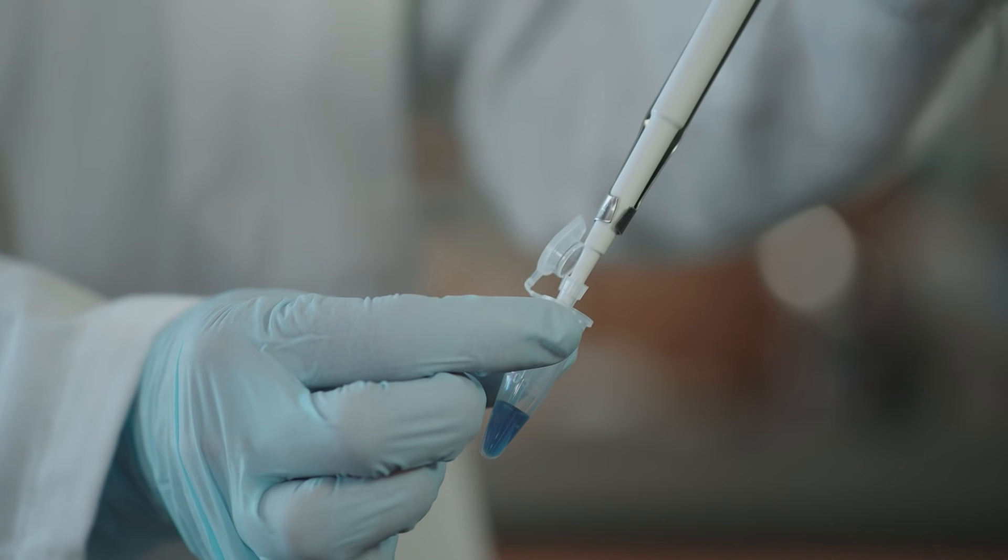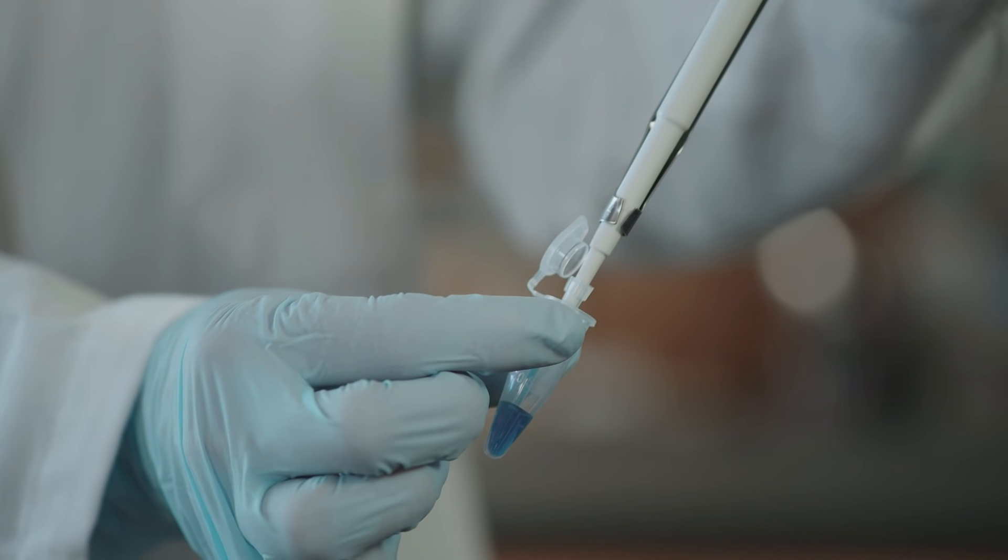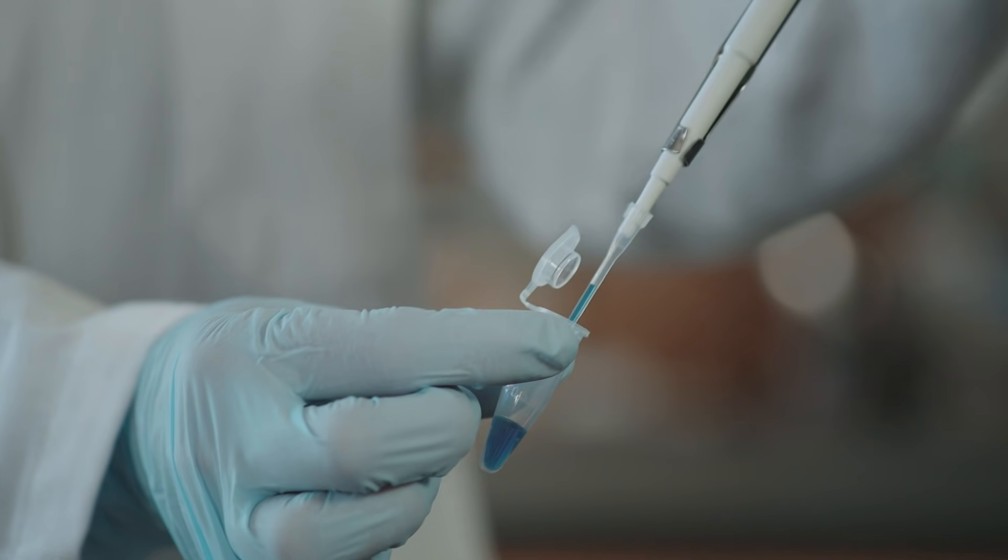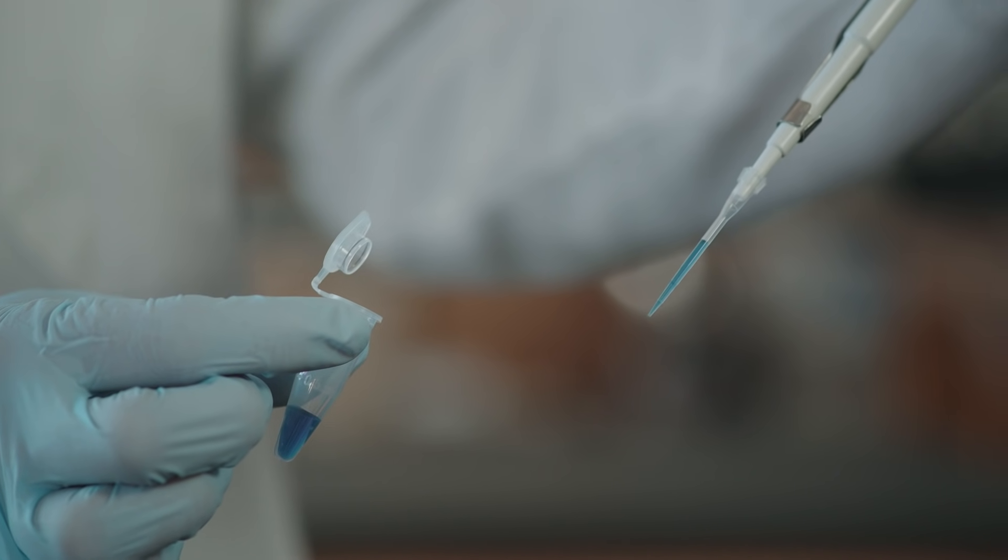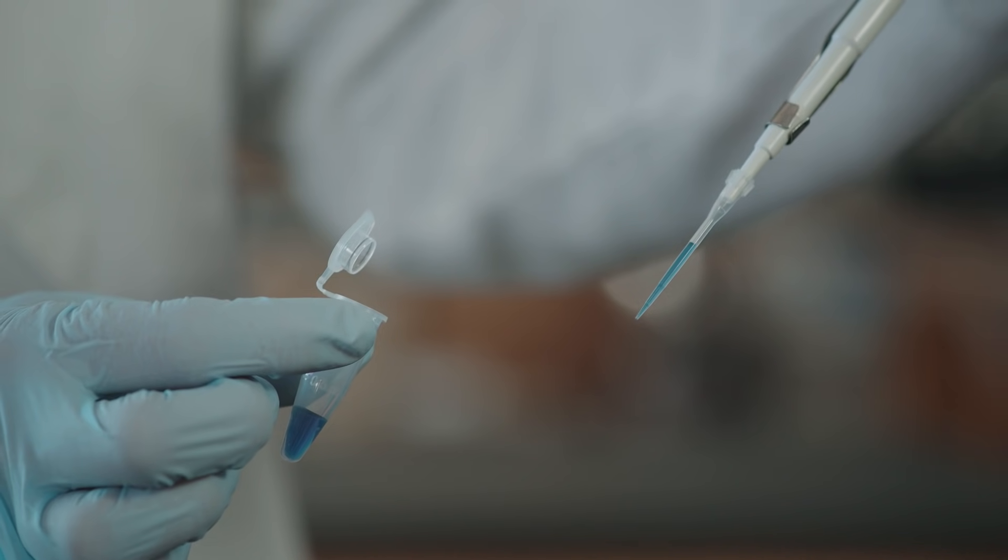Draw the tip out of the fluid in the micro centrifuge tube. The micro pipette was set for 20 microliters, so the volume of fluid taken up into the pipette tip is 20 microliters.